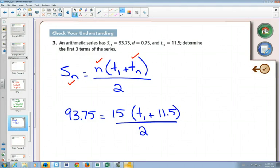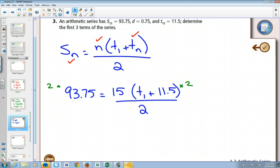So if I would multiply by 2 on both sides, I'm going to get 93, 186, 187.5. Someone checked that with their calculator. And I would still have 15 term 1 plus 11.5.